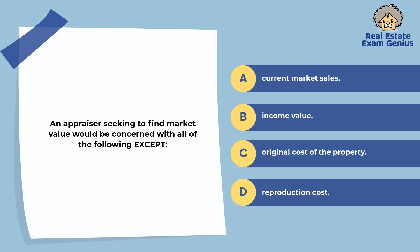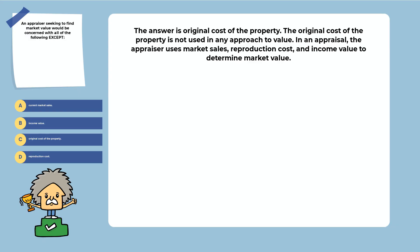An appraiser seeking to find market value would be concerned with all of the following except: current market sales, income value, original cost of the property, or reproduction cost. The answer is the original cost of the property. The original cost of the property is not used in any approach to value. In an appraisal, the appraiser uses market sales, reproduction cost, and income value to determine market value.